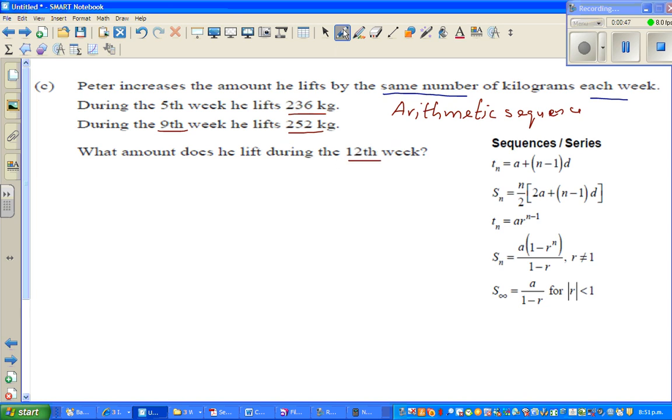Okay, so let me use blue now. So what they are saying is t5, that is the fifth week, is 236. t5 is 236, not writing the unit. And t9 is 252 kg.